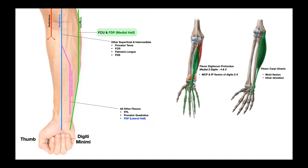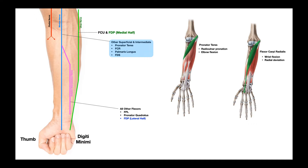Next we'll move to the median nerve. The median nerve is of course in the middle — between the radial nerve and the ulnar nerve. The median nerve is going to cross the elbow joint and run down the forearm lateral to the ulnar nerve, entering the hand just like the ulnar nerve. We'll be covering that in detail in the next video.